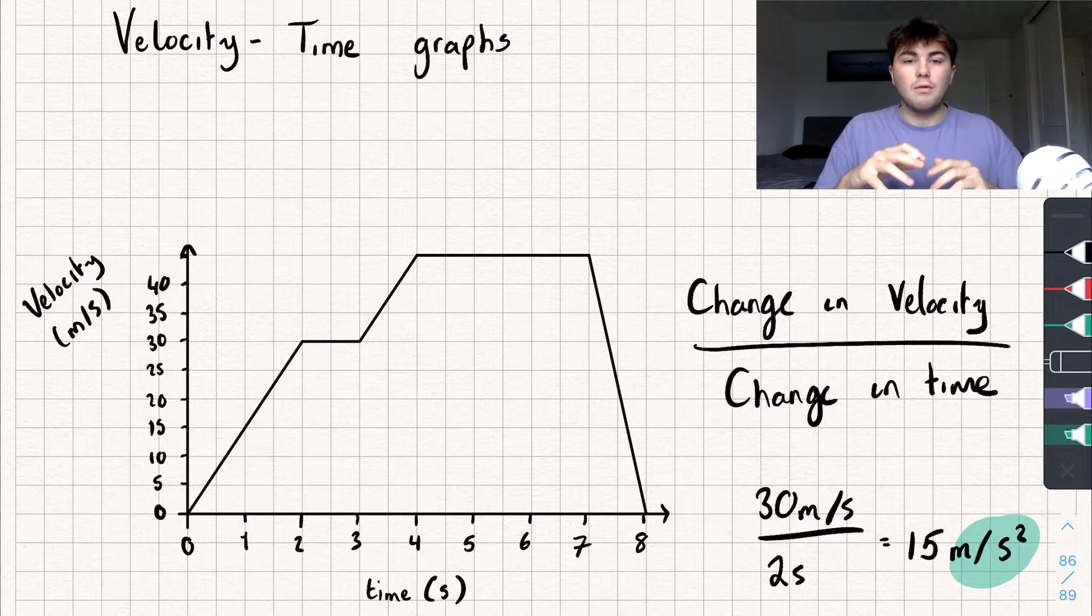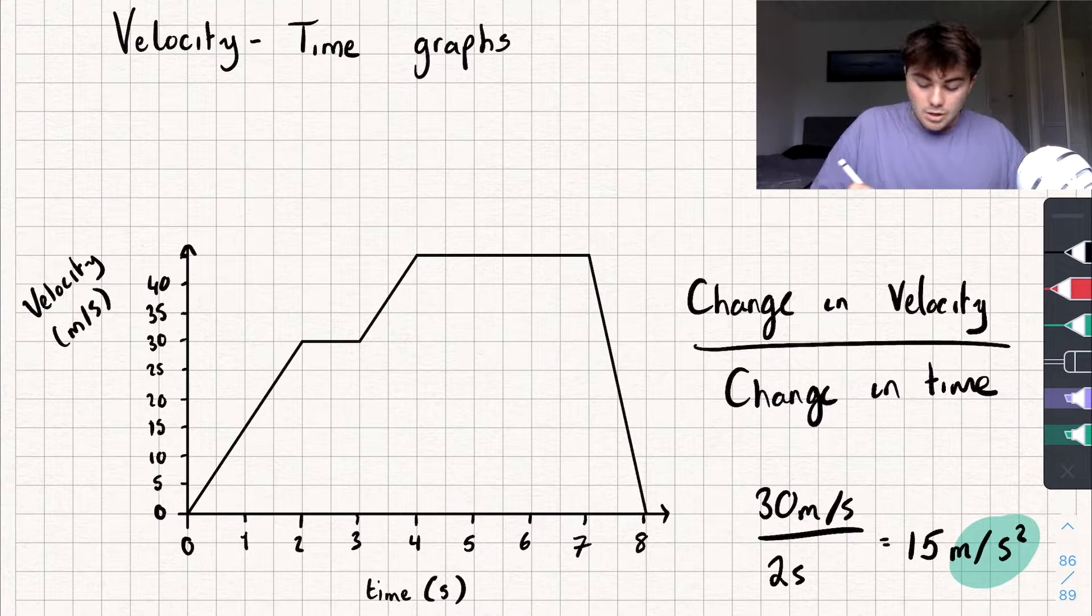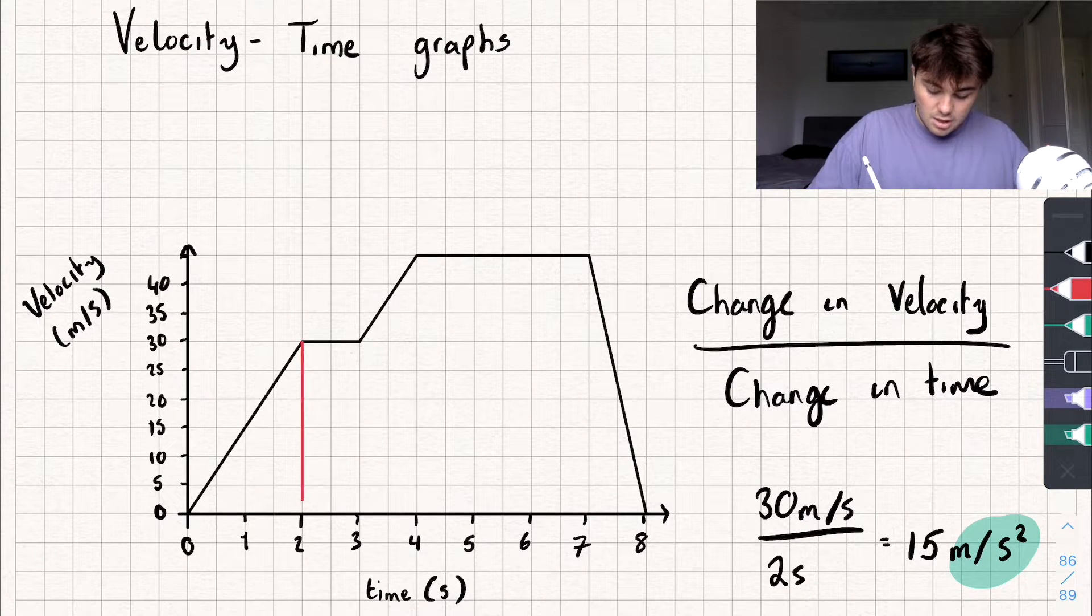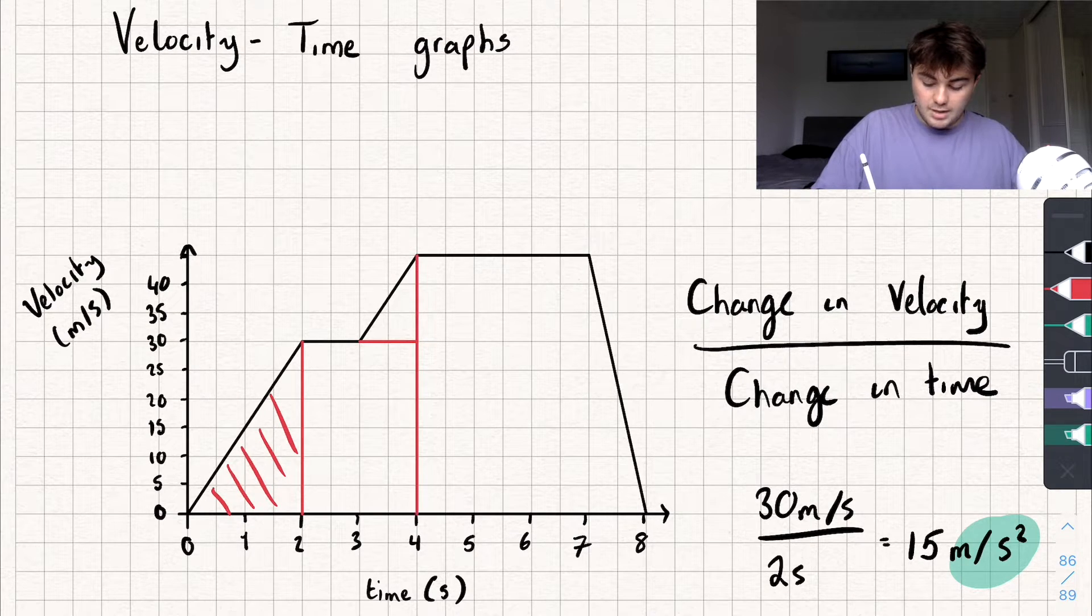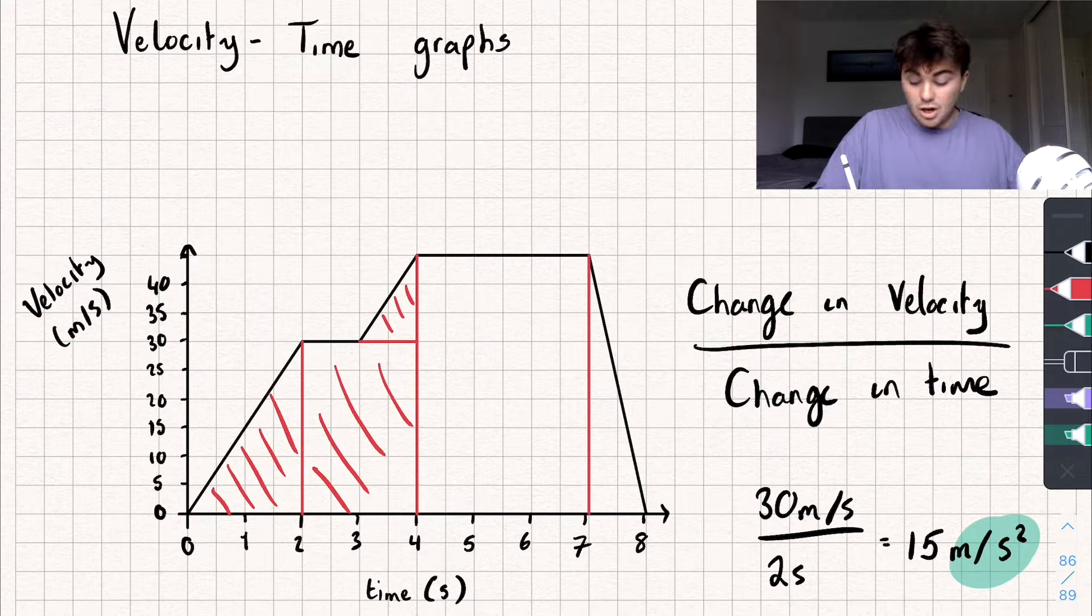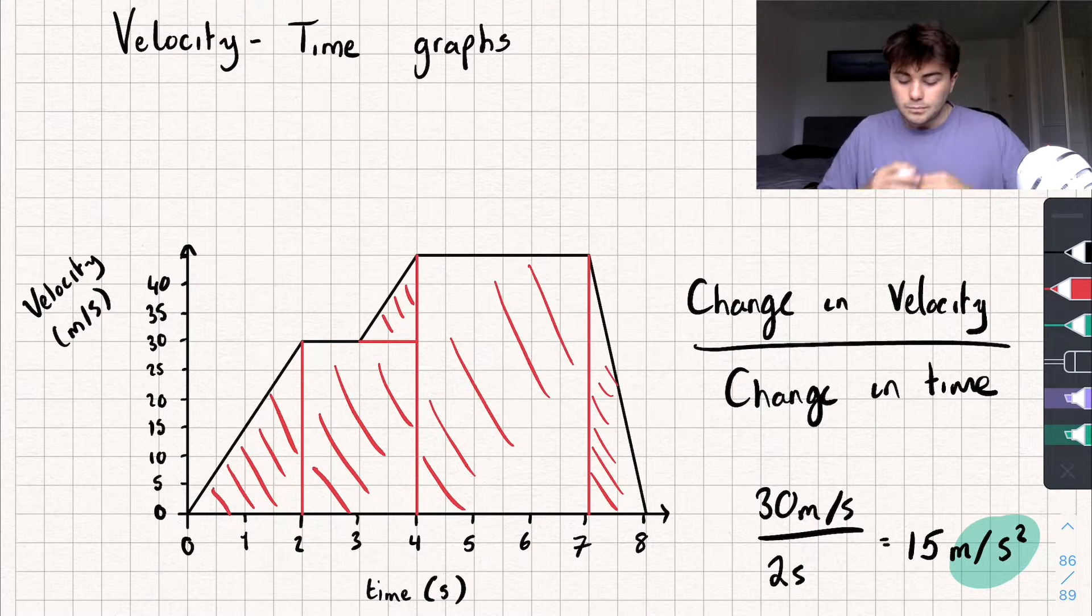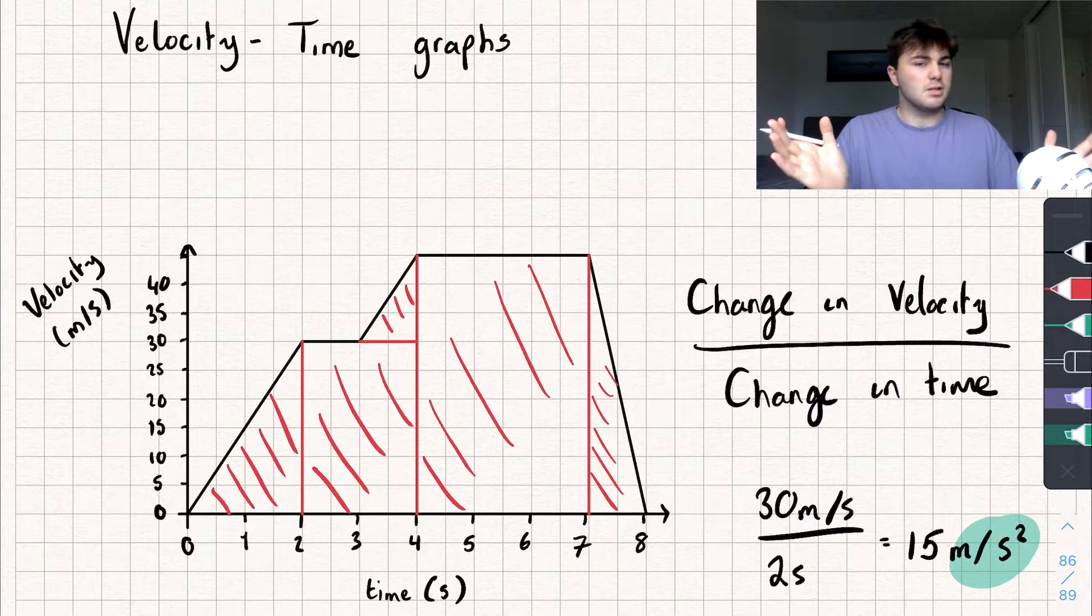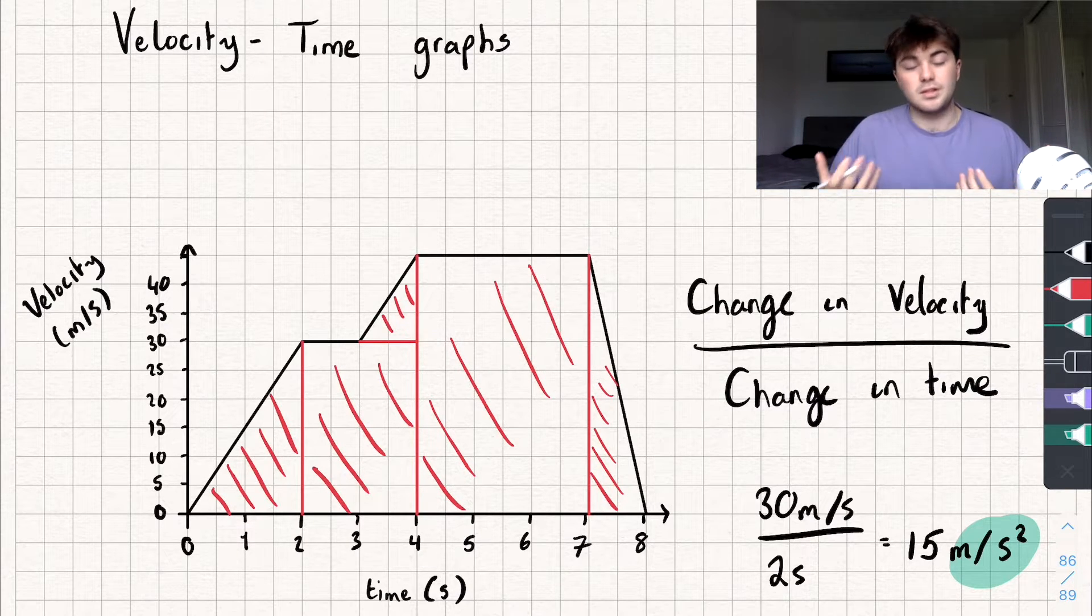The other thing I can find out using this graph is the distance travelled. And I can do that by finding the area underneath the graph. So we could do that by splitting it up into little shapes and then just adding together the areas of all the shapes. So for example, I could get this triangle here, get the area of that. I could then split this up into a rectangle and a triangle, find the area of the rectangle plus the triangle. Split this up into a giant rectangle, find the area of that. And then find the area of this little triangle there. And the reason that works is because when we're finding areas, we're going to do the time multiplied by the velocity, technically, which cancels out the time in seconds and leaves us with metres. So it gives us a distance.